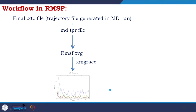For the RMSF workflow: you have the .xtc file and the .tpr file, apply gmx rmsf, get rmsf.xvg, then apply xmgrace and see the graph — RMSF with respect to residue number. You will see individual residues and their fluctuation in different structures.